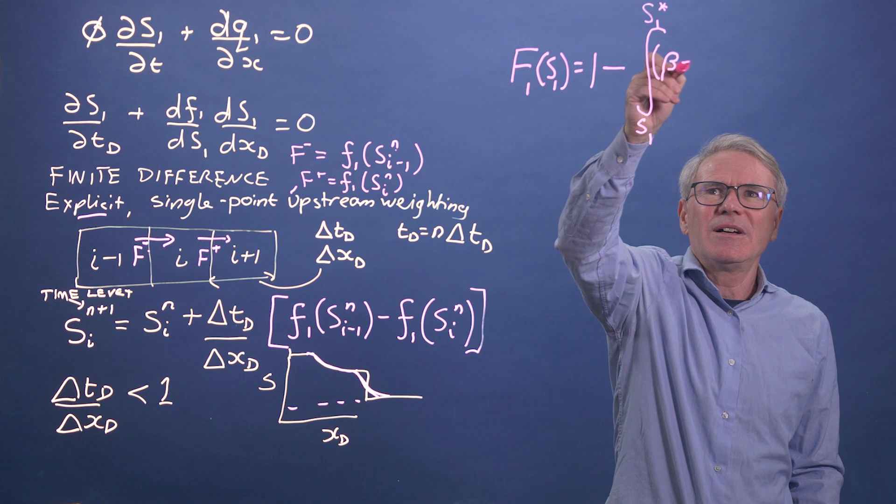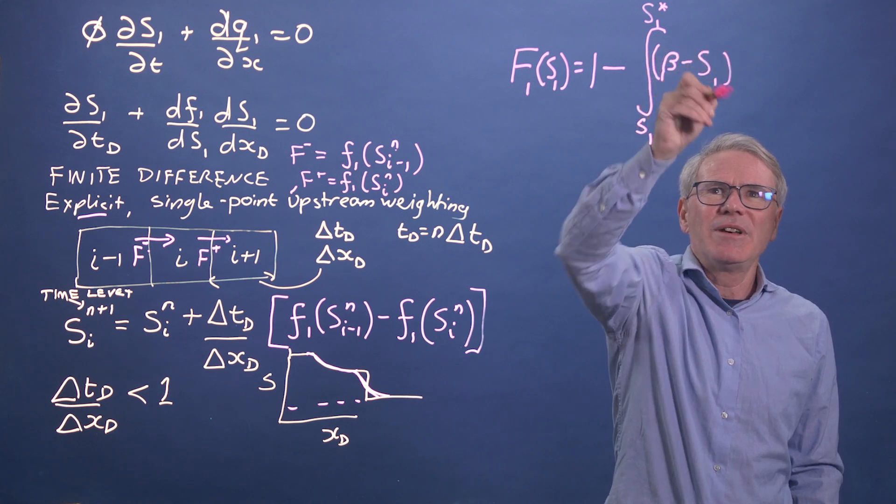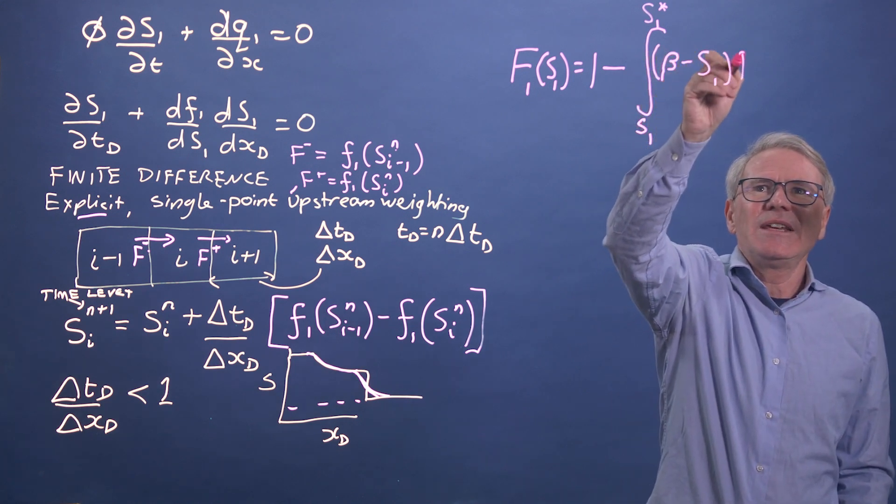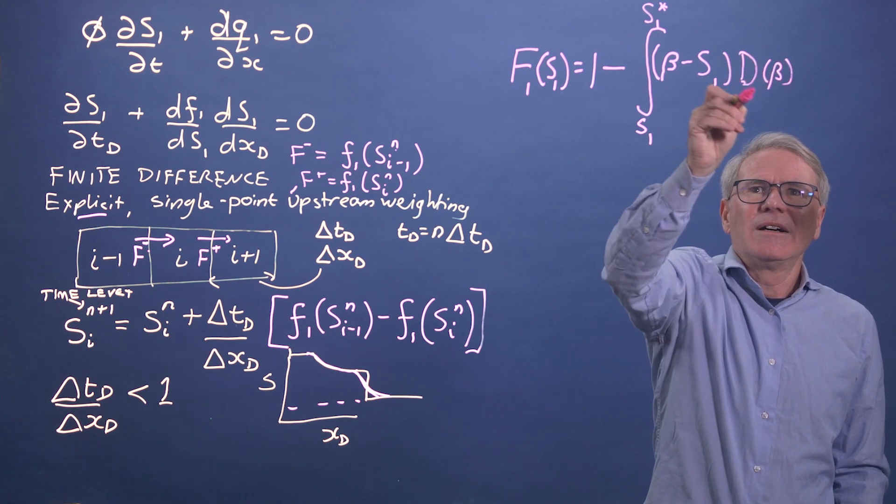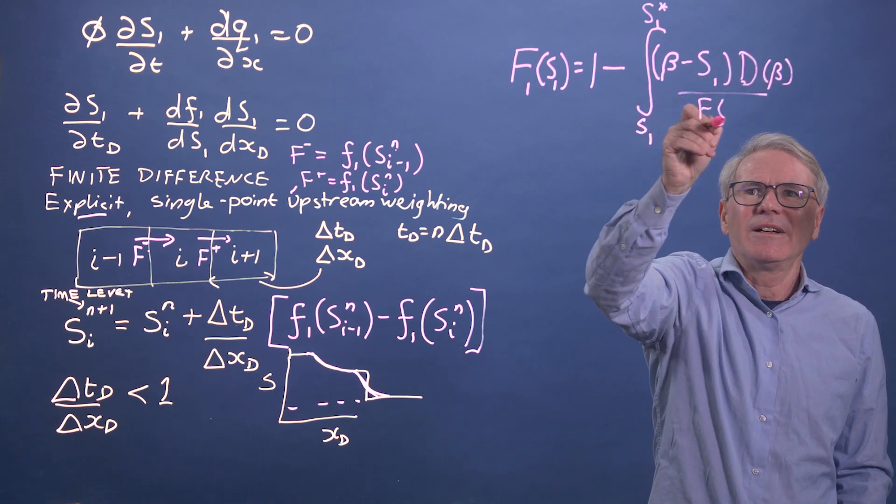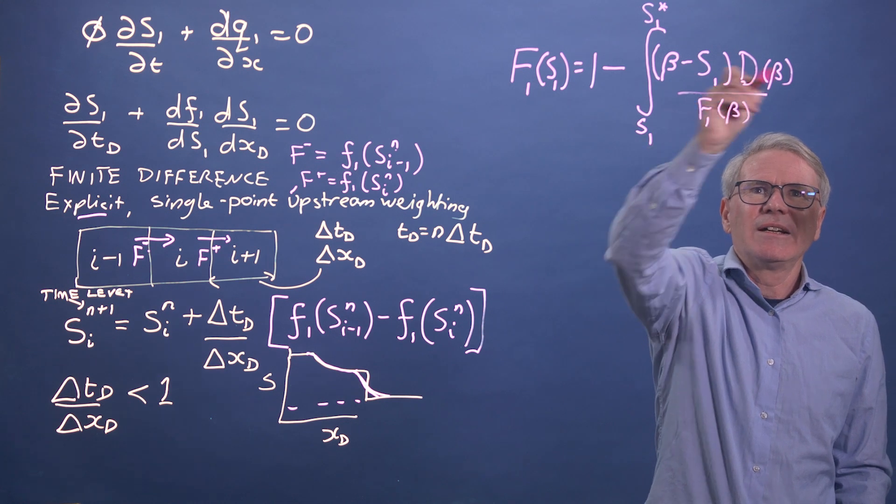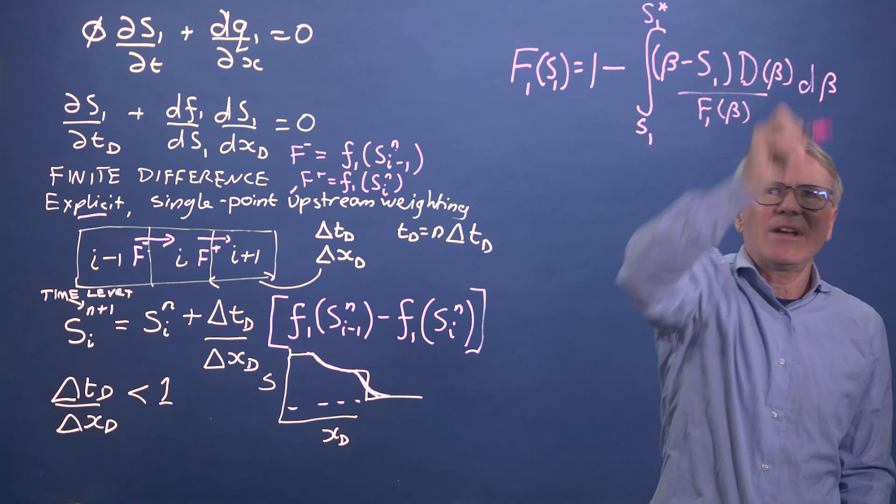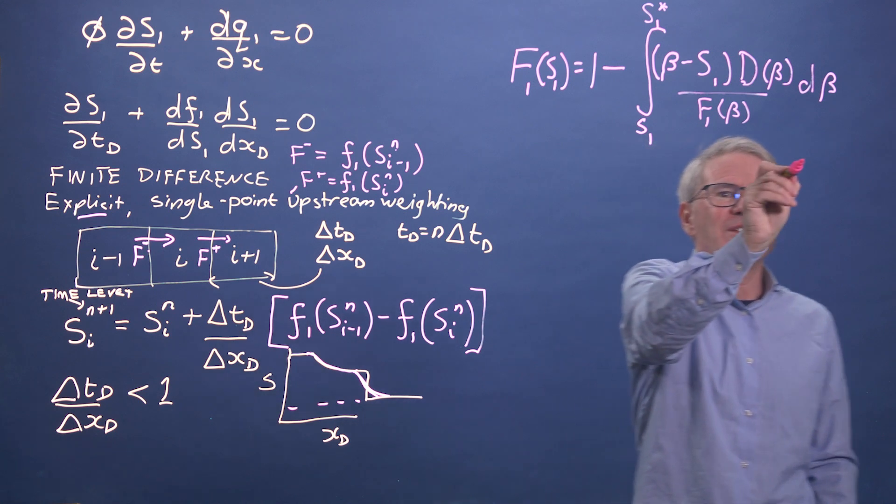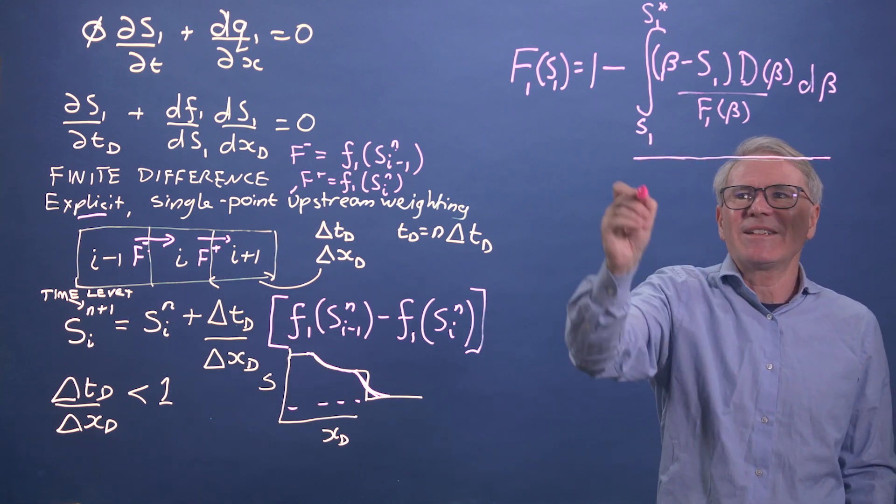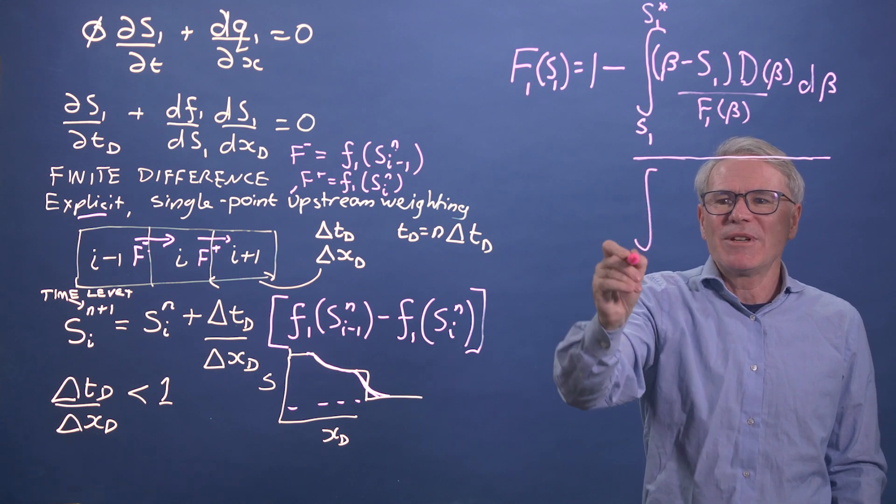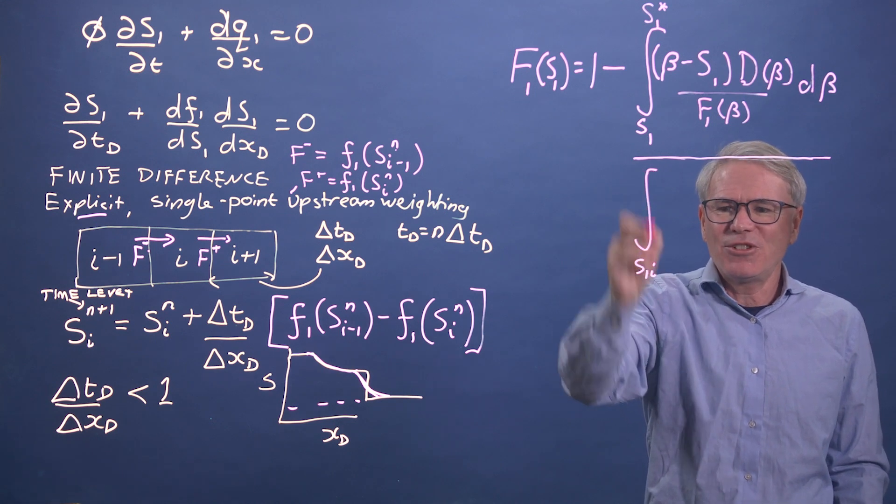All right, so let's draw it out again between some value of s1 and s1 star. You had here your value of beta minus s1, you had your d of beta over f of beta d beta. And then there was the constant,